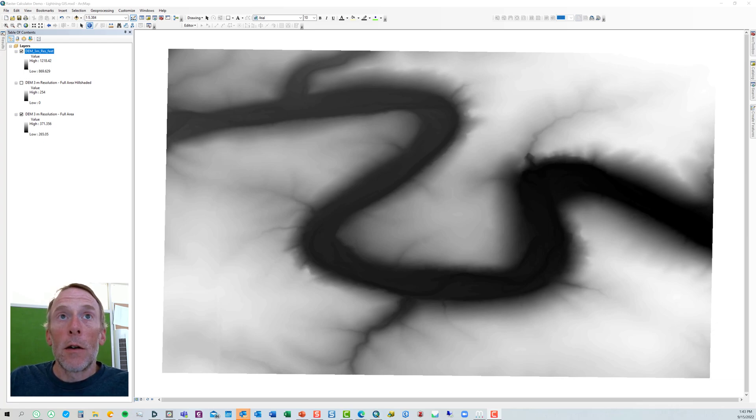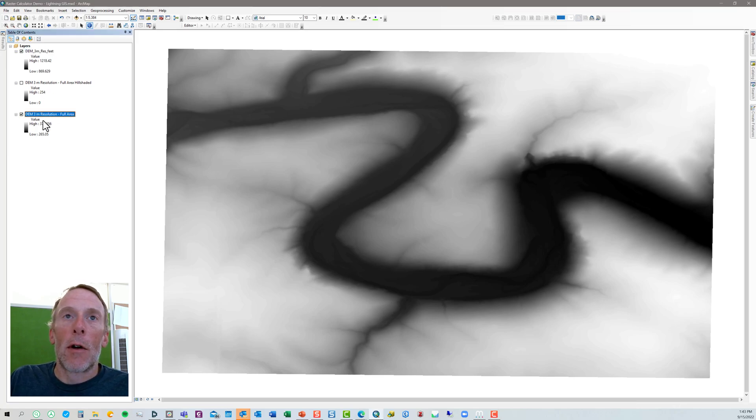OK, so our raster calculator has completed its job and a new DEM has been created that has feet raster values and it's been added to the table of contents here. Right away if you compare to the original metric raster, our low value, our low elevation was 265 and our high was 371 meters. Now we range from 869 feet to 1218 feet, so that's the 3.281 multiplied by the original values.